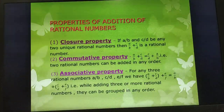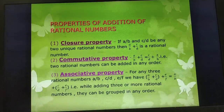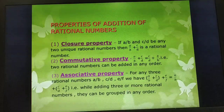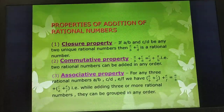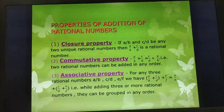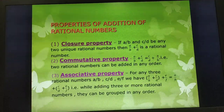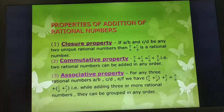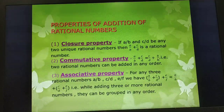Properties of addition of rational numbers. First is the closure property. If A/B and C/D are any two rational numbers, then A/B + C/D is also a rational number. For example, 2 + 3 = 2/1 + 3/1 = 5/1, which is simply 5, a rational number. Therefore, closure property exists in rational numbers.